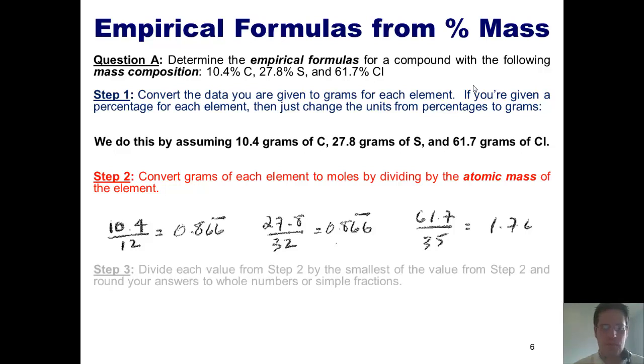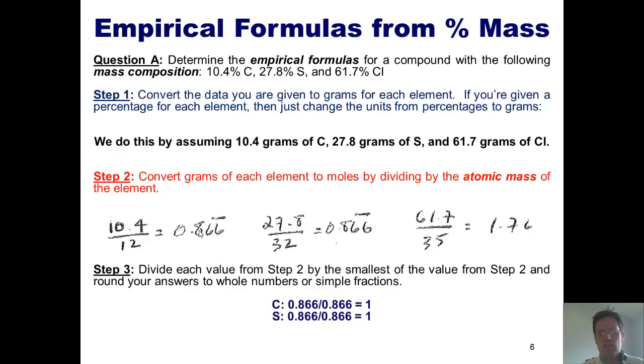Congratulations, we're done with step two. Step three, divide all of the answers that we just got by whichever one is the smallest and round to the nearest whole number. You'll note that I've got 0.866, 0.866, and 1.76. Which of those three values is the smallest? Well, obviously these two tie, 0.866. So what I'm going to do is for carbon, take 0.866, divide it by itself, and we get one. For sulfur, I get the same. And for chlorine, 1.76 divided by 0.866, I get two.